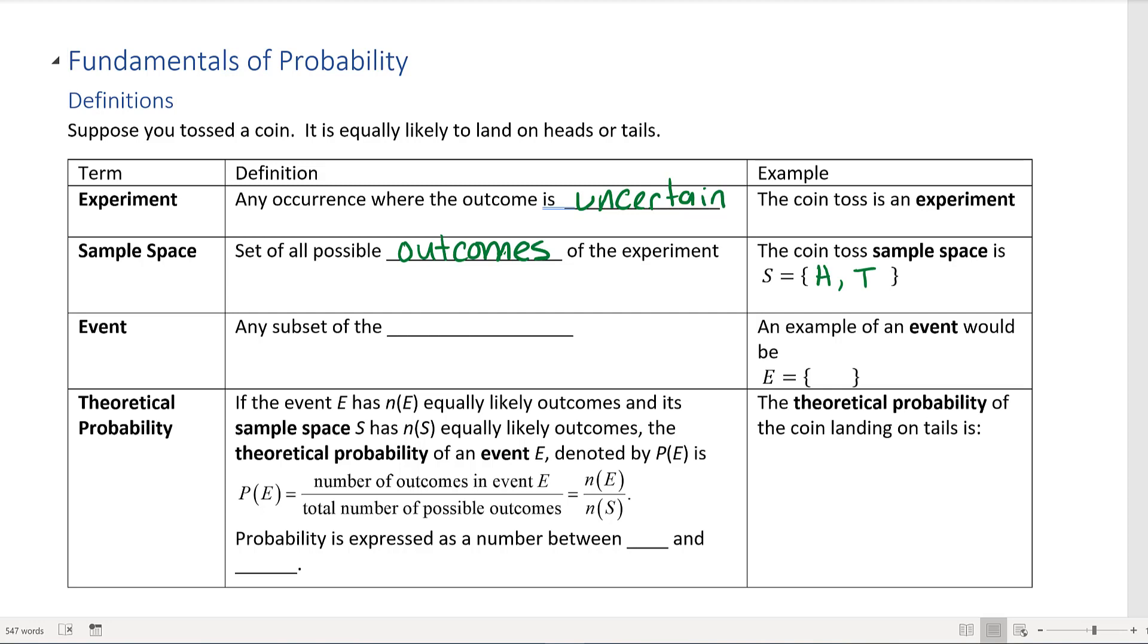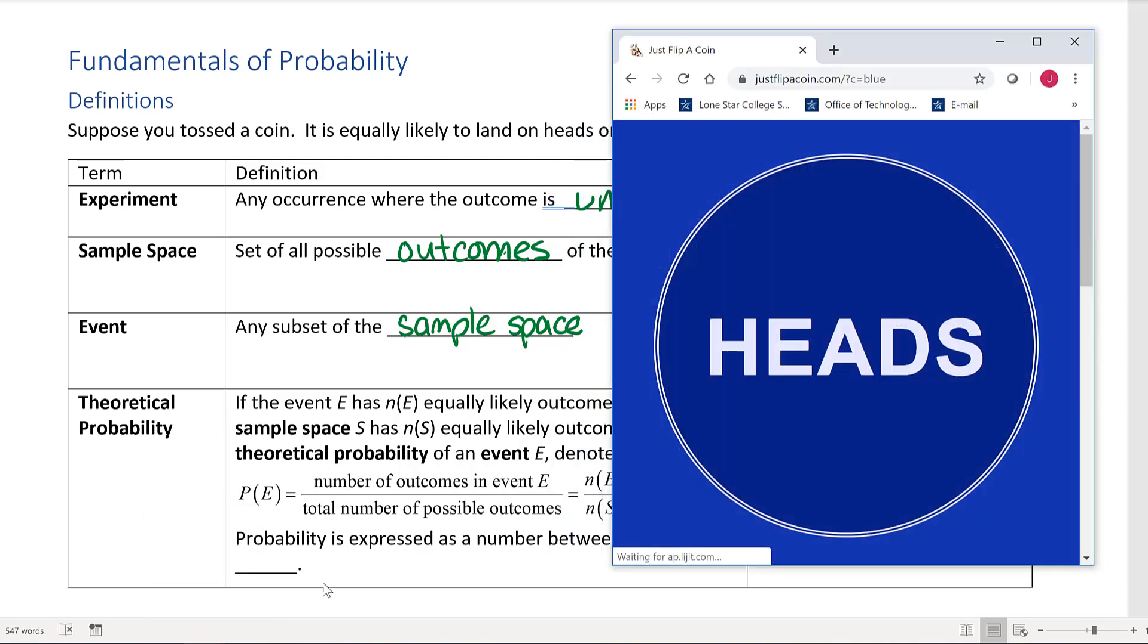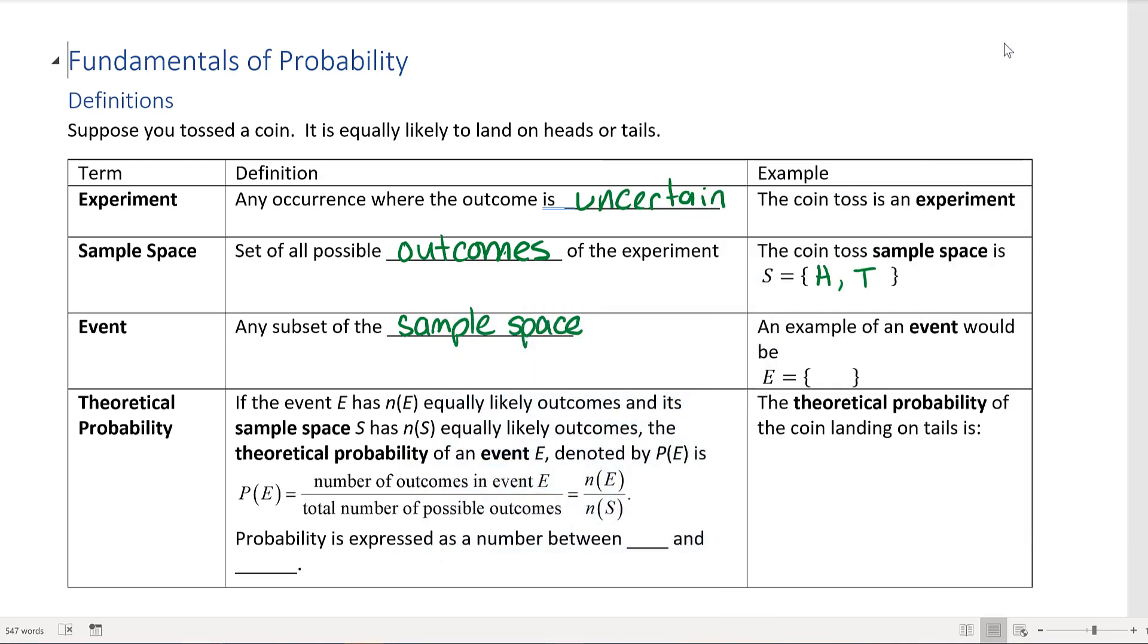The next term is event. An event is any subset of the sample space. For example, let's say you toss the coin once - let's go ahead and actually toss the coin and see what happens. Looks like it's tails, so our event will be tails.